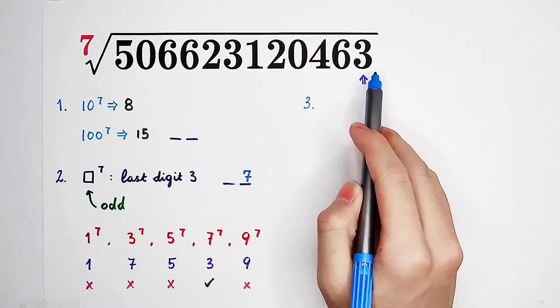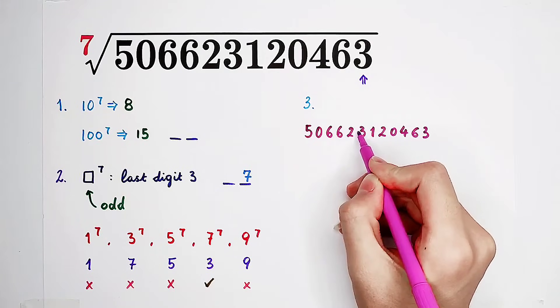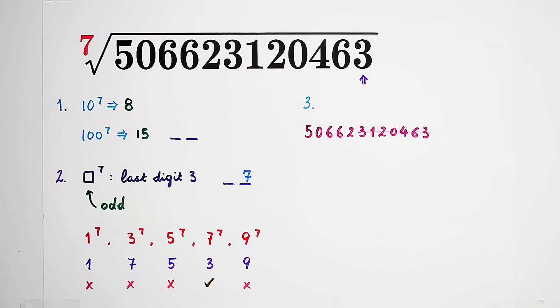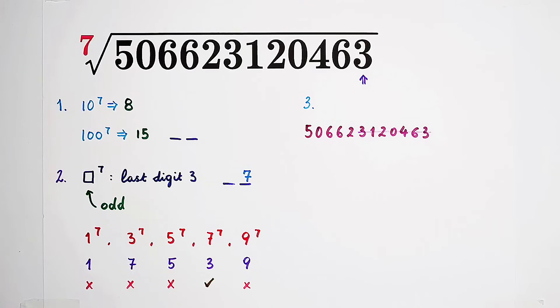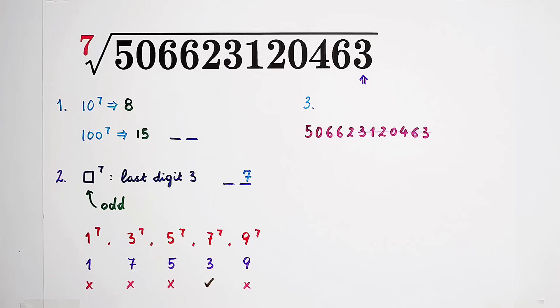Write this number down. Now, isolate the last 7 digits. Why 7 digits? Because, the 7th root. So now, I have to delete the last 7 digits, then focus on the first ones.